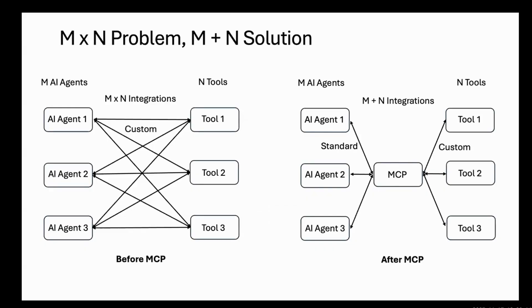This gives rise to a classic software engineering problem called M by N integration. It happens when you have many clients on one side and many servers on the other side. Without a standard way to connect them, every client needs a custom integration with every other server. That means instead of building a few connections, you end up with M multiplied by N integrations — which is costly, repetitive, and very hard to maintain.